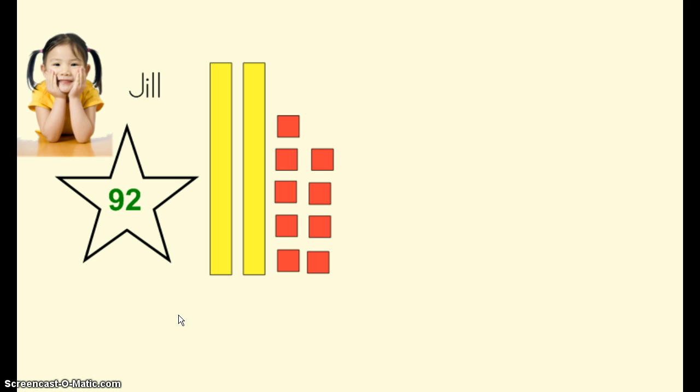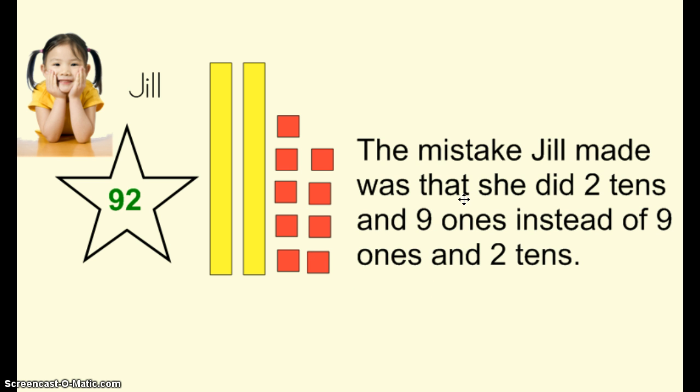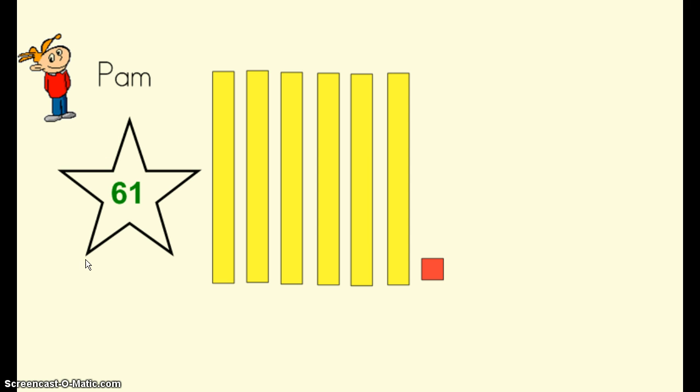If you said that Jill mixed up the tens place and the ones place, you are correct. If I asked you to explain the mistake that Jill made with words, you might write: the mistake Jill made was that she did two tens and nine ones instead of nine tens and two ones. Tomorrow in class you will be asked to write sentences explaining the mistakes that were made. If the student made the number correctly like Pam did, you wouldn't have to explain the mistake.